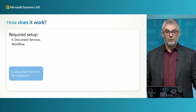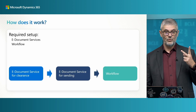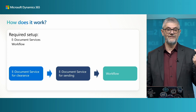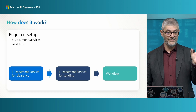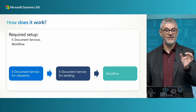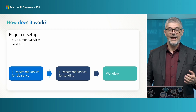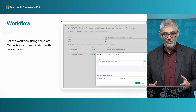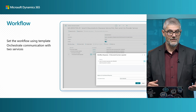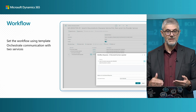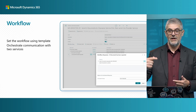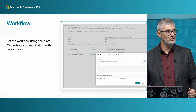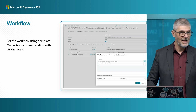To set up, you need to do two things: set up your e-document services and workflow. You can see three types here. First, an e-document service for clearance, and then a second e-document service for sending to your customers. Finally, you need to set up a workflow to orchestrate these two services. When you create a workflow, you have a template you can use. You can set up which service is first and which is second. Benji will now show a full end-to-end scenario: how you send for clearance, how you deliver to the customer, and what the setup looks like.